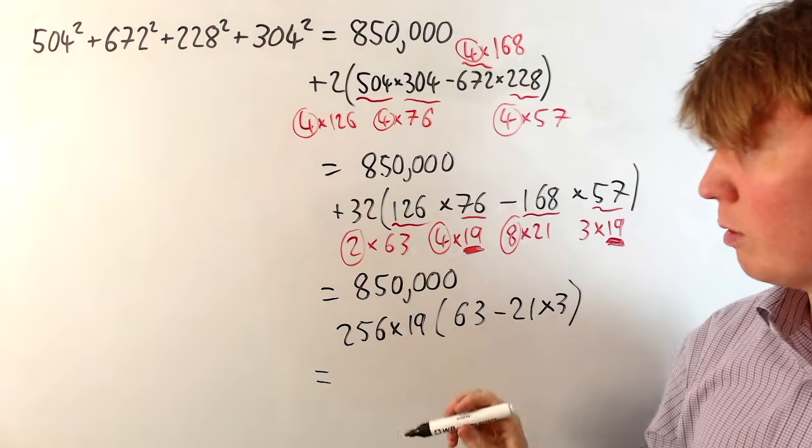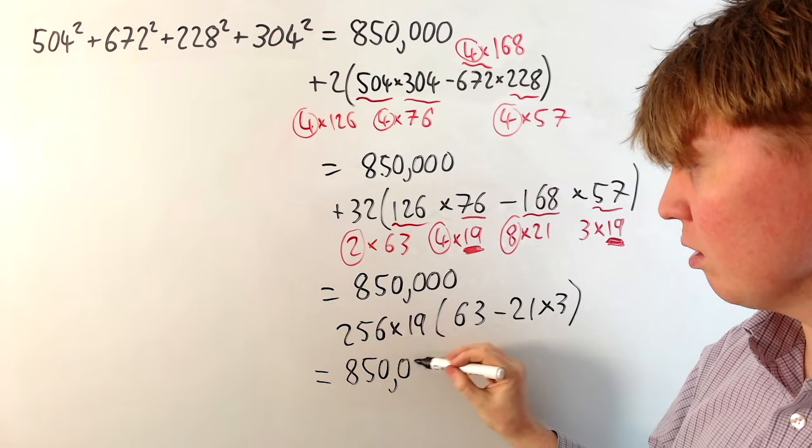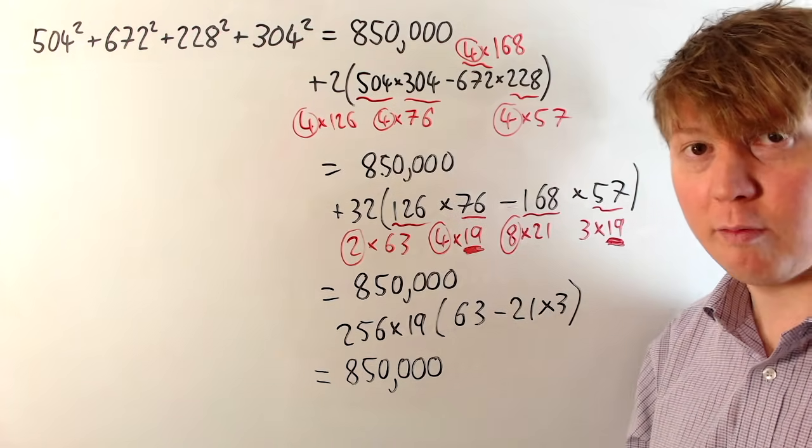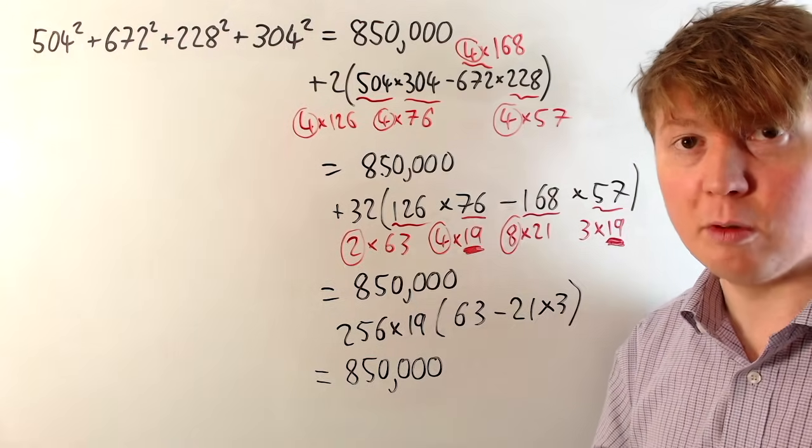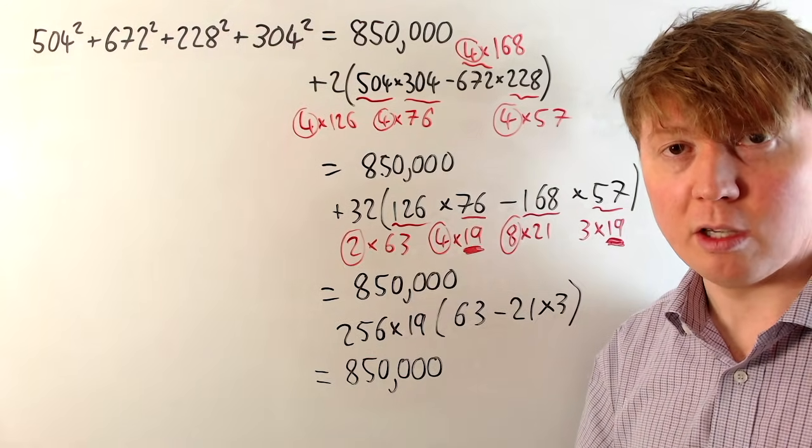So then our original sum of squares expressions, quite surprisingly then, is actually just equal to 850,000. And this second term that we've got here doesn't even contribute. It's just 0.